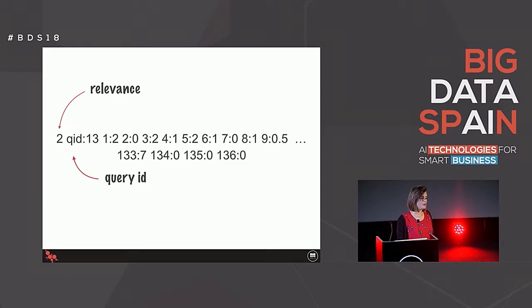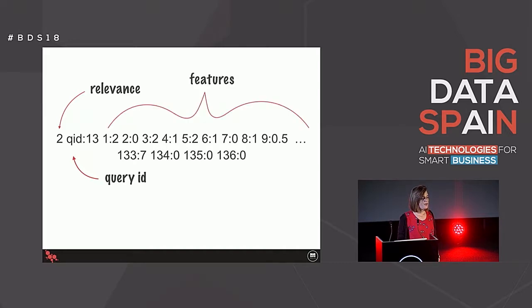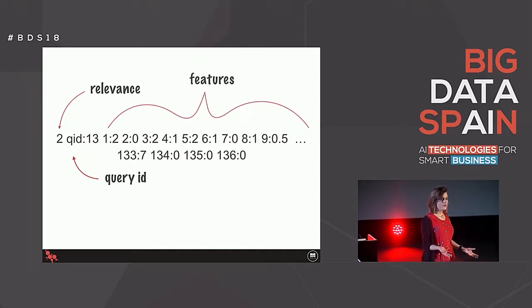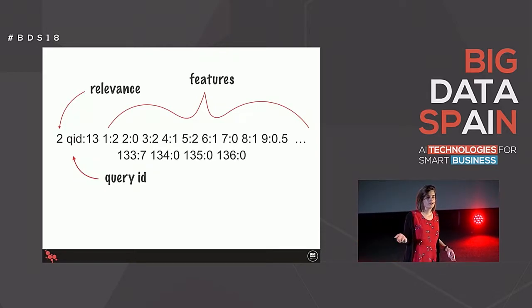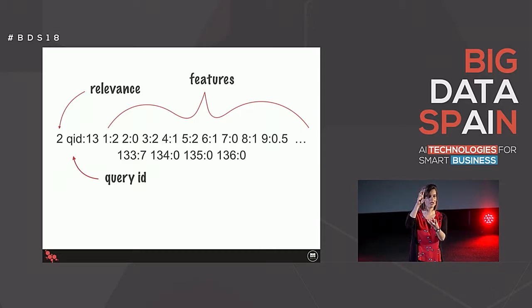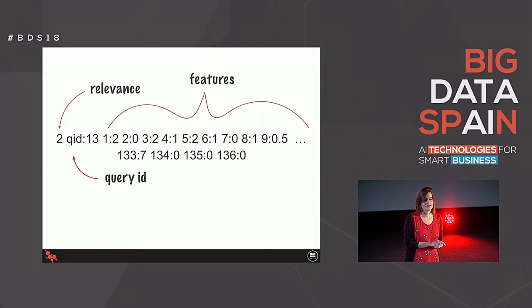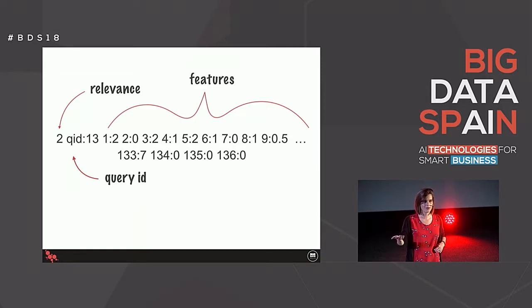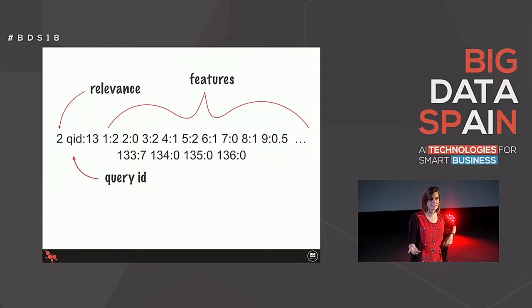The first thing in each row is the relevance given by the user - that number between 0 and 4. Next is the query ID, written as 'qid:' then the query ID. Everything else is our feature vector, which in this example is 136 features long - that's our summary of the query and the document. The kth feature is written as 'k:value', so the first feature has value 2, the 133rd has value 7, and so on.